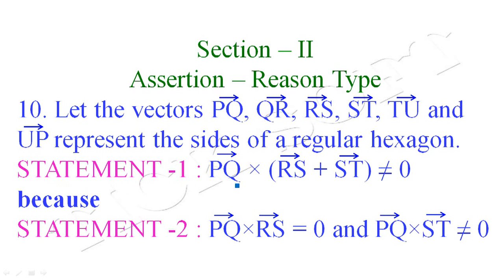Statement 1 is: PQ vector cross (RS vector + ST vector) is not equal to 0. Statement 2 is: PQ vector cross RS vector equals 0, and PQ vector cross ST vector is not equal to 0.